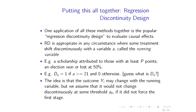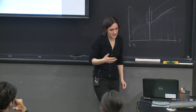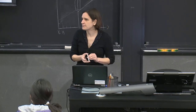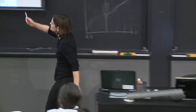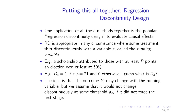Call the running variable a, and call the treatment D_a equals 1 if a is greater than some threshold — here I put the threshold at 21, call it α₀ — and 0 otherwise. We'll use as an example from Josh Angrist and Steve Pischke's book, Master of Metrics, dissecting an article by Carpenter and Dobkin. At 21, something shifts discontinuously. What do you think the treatment is?